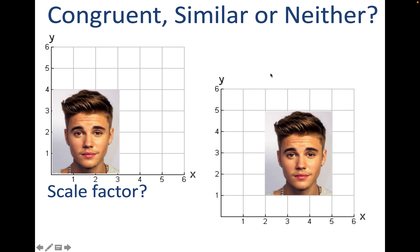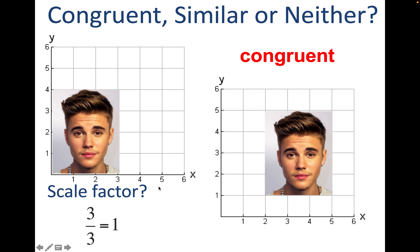Let's look at similar, congruent, or neither. We have an image that is three by four units. The question is: are the two versions congruent, similar, or neither? They are congruent, because both are three units by four units, with 90-degree angles — both rectangles. Is there a scale factor? Scale factor means did one have to grow to become the other? If they're congruent, they're the same size already, so there is no scale factor. Checking the width: three divided by three equals one — you multiply by one, it stays the same size.